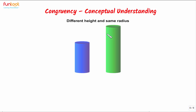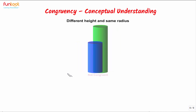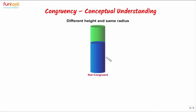Once again we have a pair of cylinders of different sizes. This time they have different heights but the same radius. When the cylinder of lesser height is placed in front of the cylinder with greater height, we can once again see both cylinders, as their sizes are not the same, and hence the cylinders are not congruent.